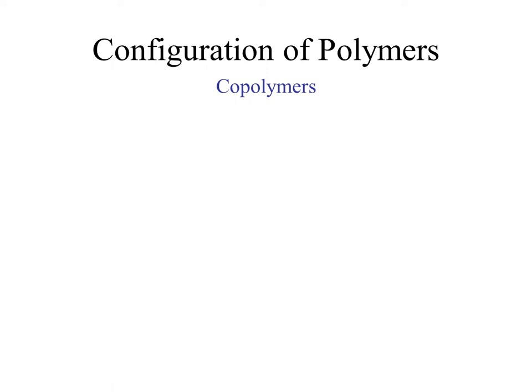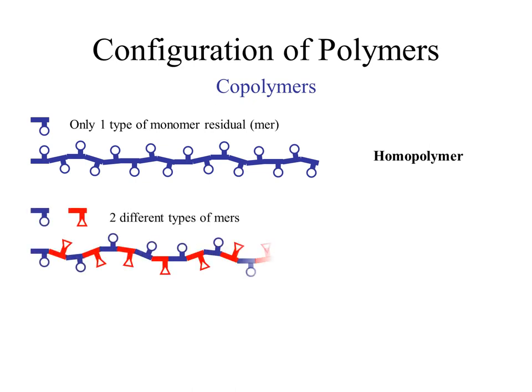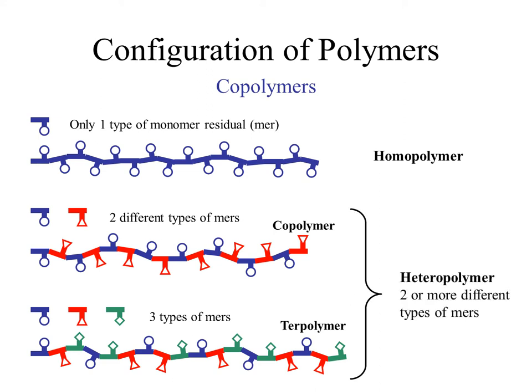To begin our in-depth look at polymer configuration, we consider the monomer residuals. In the simplest case, we have a polymer composed of all the same repeat units — this type results in what is referred to as a homopolymer. Adding some complexity, we have a polymer made from two different monomers, shown here as blue and red molecules. The resulting polymer has two different types of monomer residuals, and is referred to as a copolymer. There can be more than just two different types of mers in a polymer — with three distinct monomer residuals, the result is referred to as a terpolymer. In general, any polymer that has more than just a single type of repeat unit is referred to as a heteropolymer.